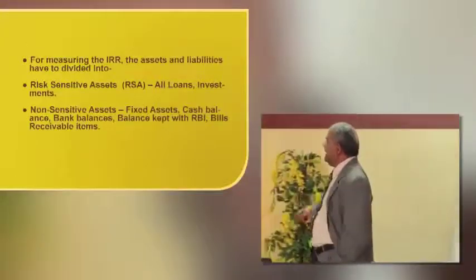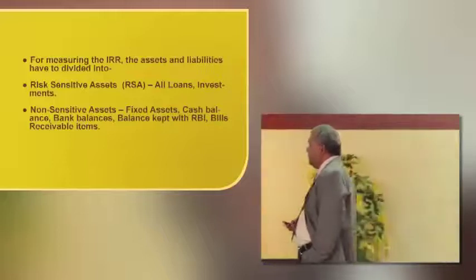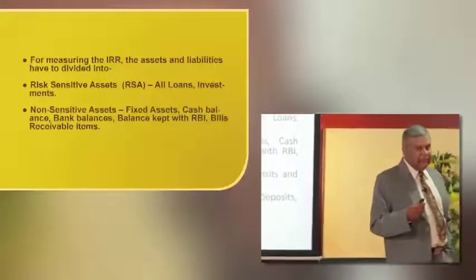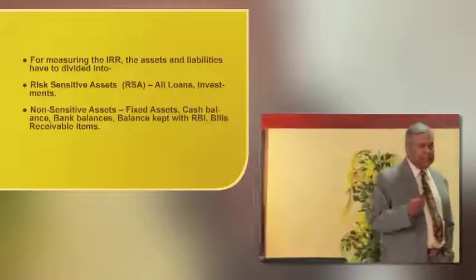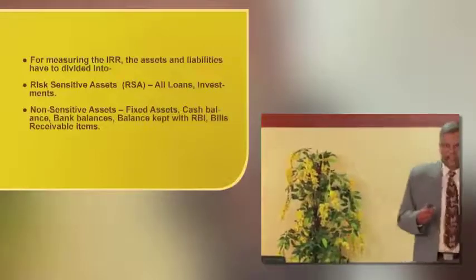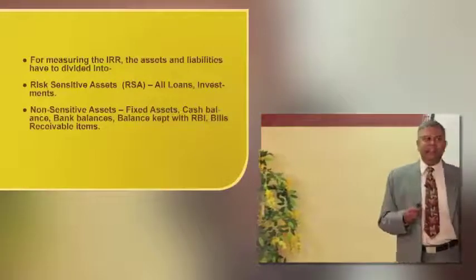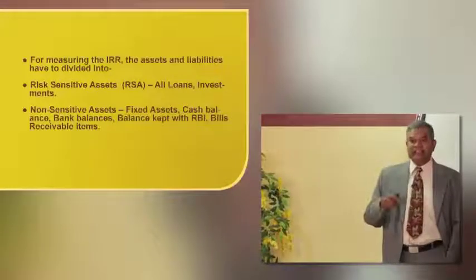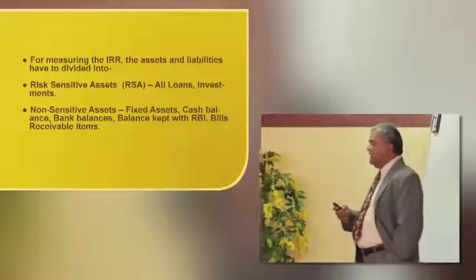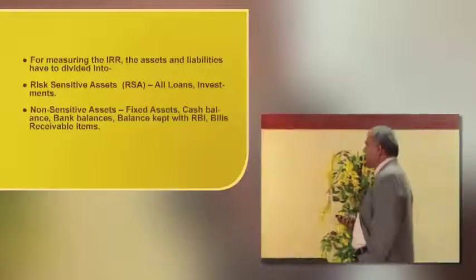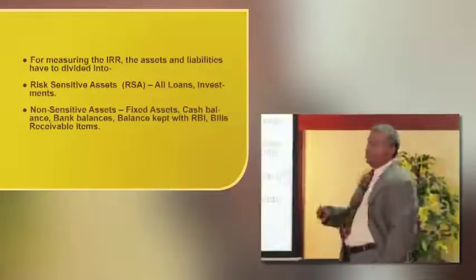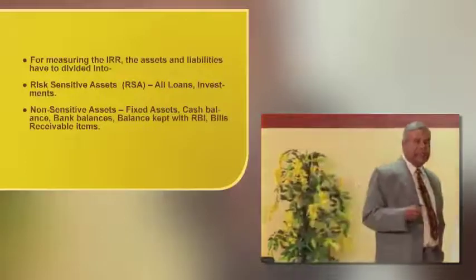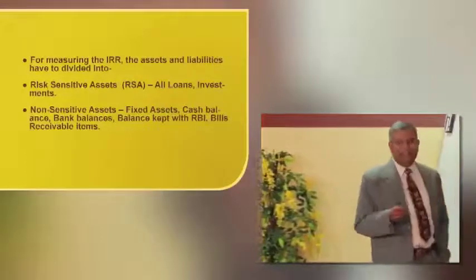In measuring interest rate risk, we divide assets into two types and liabilities into two types. On the asset side: risk-sensitive assets and non-sensitive assets. On the liability side: risk-sensitive liabilities and non-sensitive liabilities — those with no interest attached.